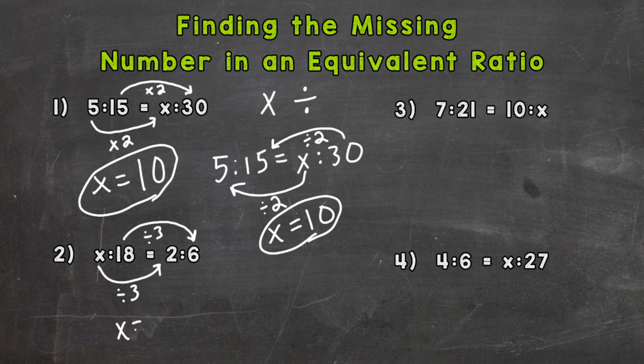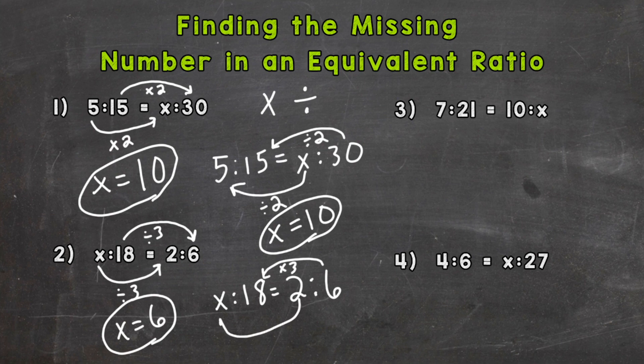Or let's do it with multiplication. We can see that 6 times 3 gives me that 18, so we can do 2 times 3, which gives us an answer of 6. Both ways work. It just depends on your preference and how you think through the problem—multiplication or division.